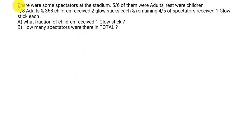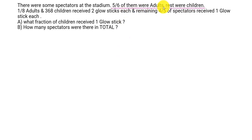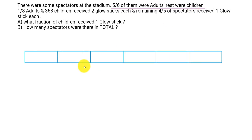So first, let's take a look at the statements that are crucial for solving this. There were some spectators in the stadium — we don't know how many — but five-sixths of them were adults. The rest were children. Five-sixths of them were adults, which means if we divide the total spectators into six parts,